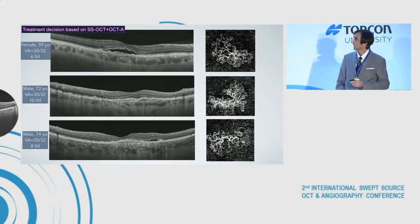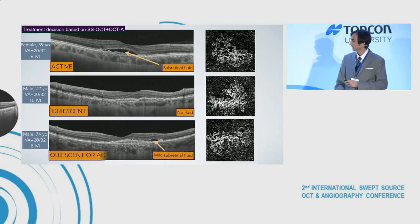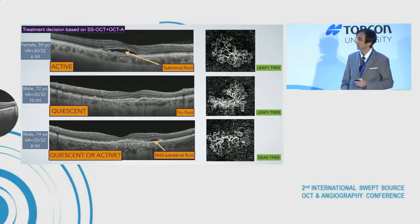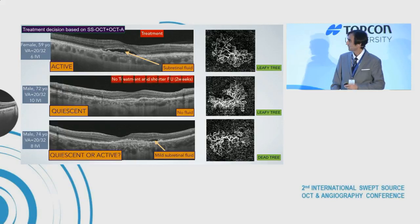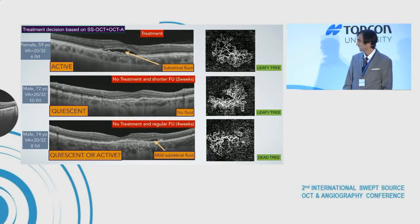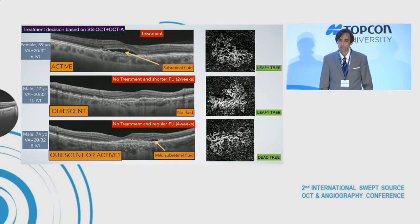Now let's add the information provided by OCT angiography. The first case: subretinal fluid, active — needs treatment, and the OCTA shows a leafy tree appearance, confirming activity. The second case: no fluid, but the leafy tree is also present on OCTA, so no treatment but a shorter follow-up is recommended because it could be a risky lesion. The third case: mild subretinal fluid, but it's a clear dead tree on OCTA — not a very risky lesion, no treatment advisable, and regular follow-up can be recommended.